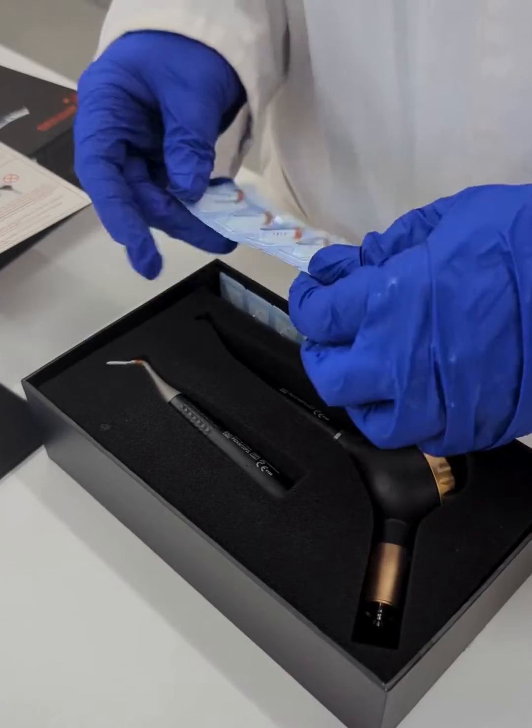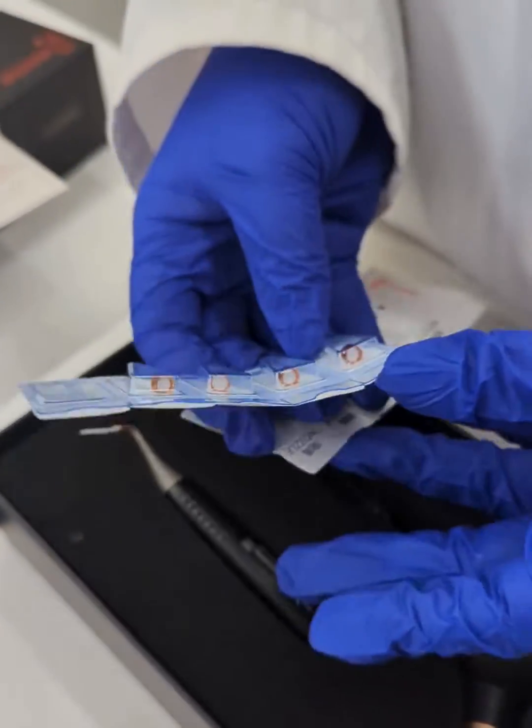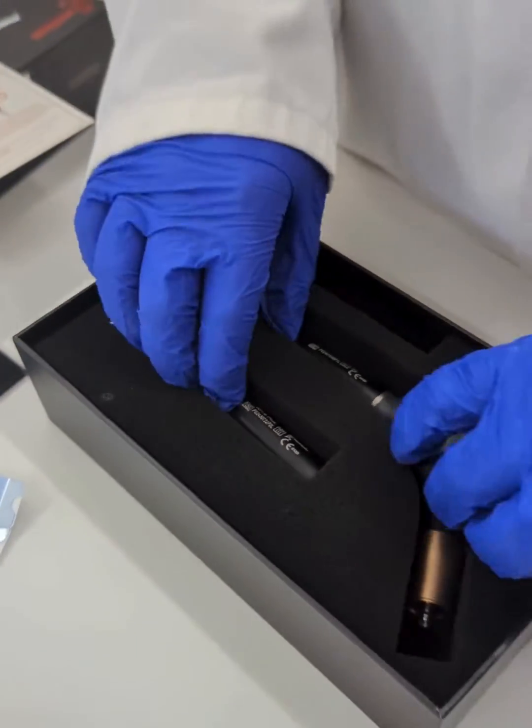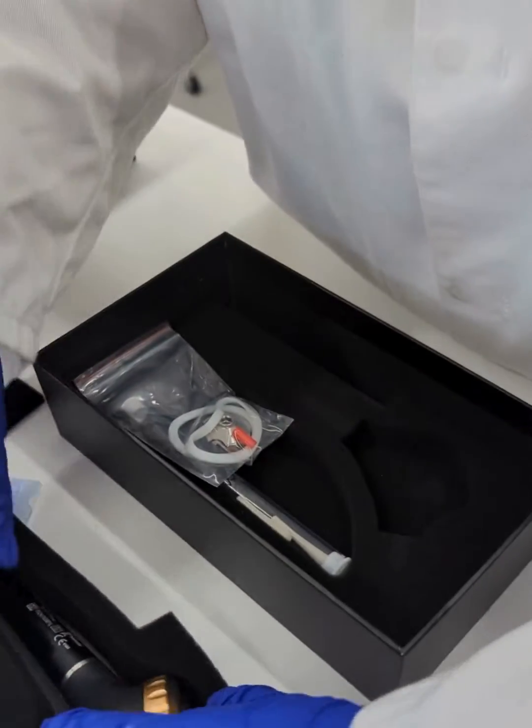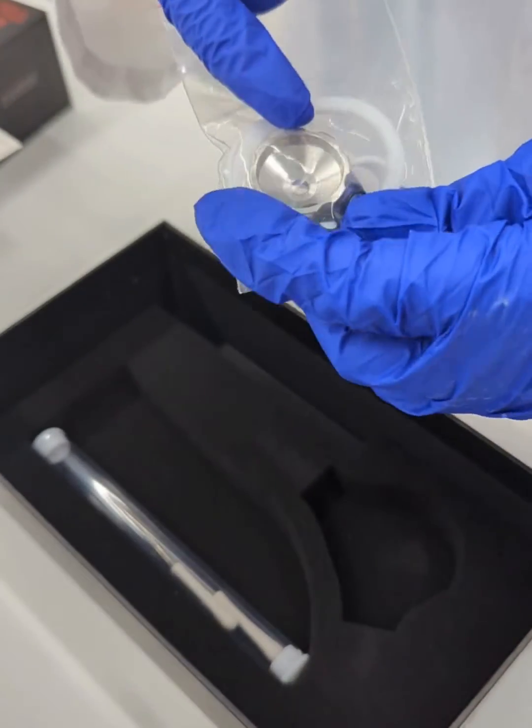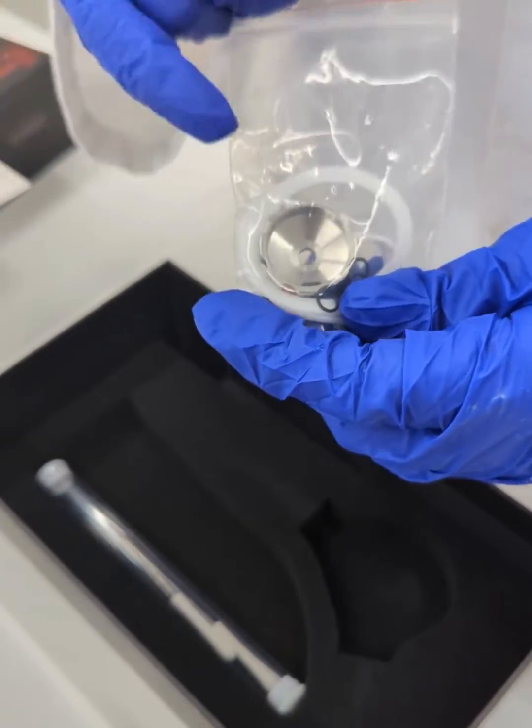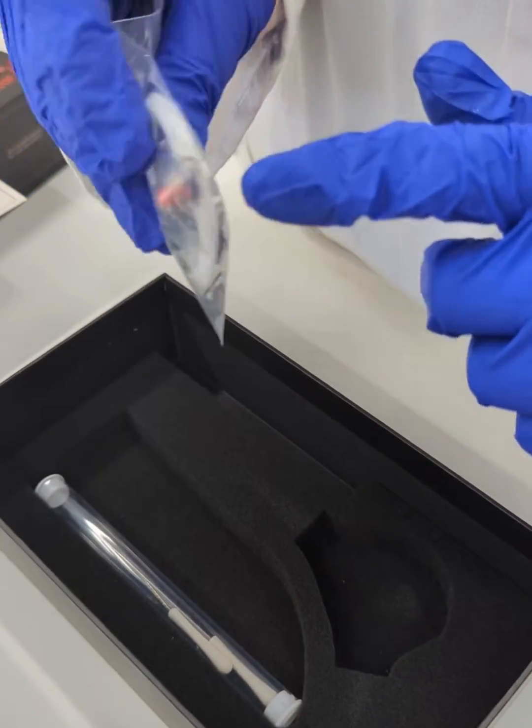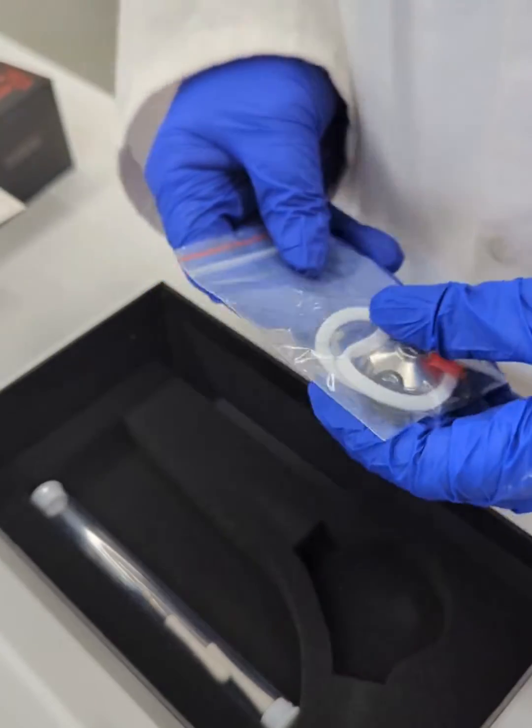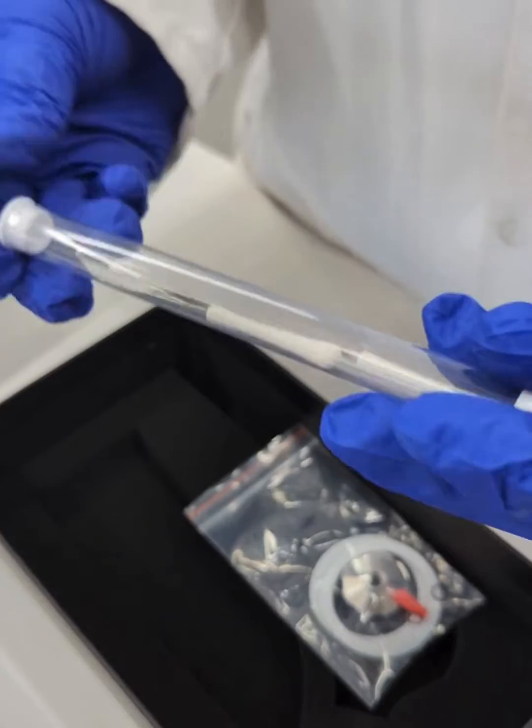You also get the replaceable tips here in the box. And underneath this, you also get the metal tip tightener for the perio and plenty of spare o-rings for the handpiece if you have any leaks and some cleaning tips as well.